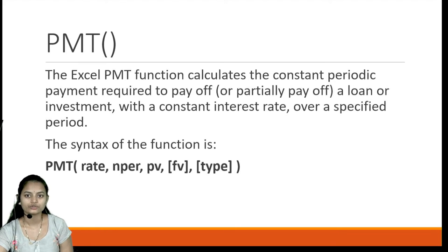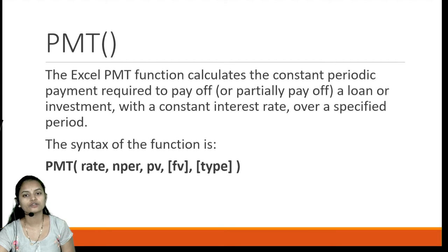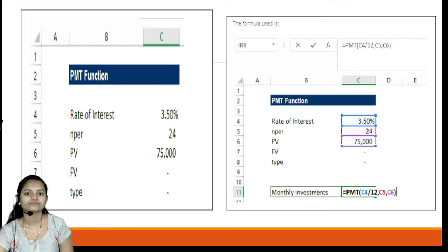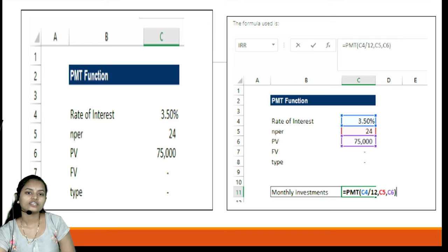The third function is the Excel PMT function. This function calculates the constant periodic payment required to pay off or partially pay off a loan or investment with a constant interest rate over a specified period. The syntax is PMT with parameters: rate, nper, PV, FV, and type. Using the known values of PV and FV, we can calculate PMT. A table provides the given values, and we apply the PMT formula with those parameter values to get the result, as shown in the picture.